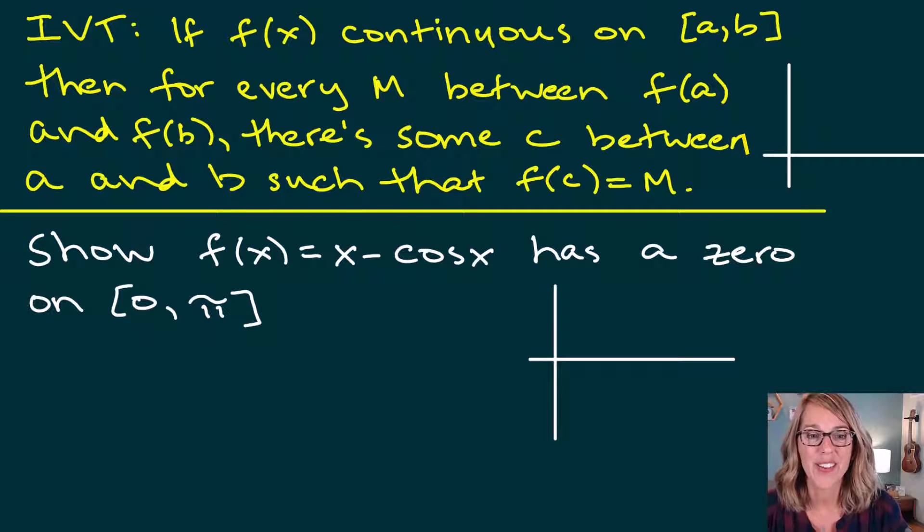We want to use the intermediate value theorem to show that f of x equals x minus cosine x has a zero on 0 to pi, that interval. First of all, let's unpack the intermediate value theorem just enough so we can get through this problem.